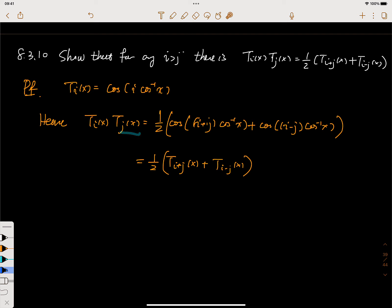We can use the property of trigonometric functions. The cosine times cosine is just the cosine of the sum of the two angles plus the cosine of the difference of the two angles, divided by two.